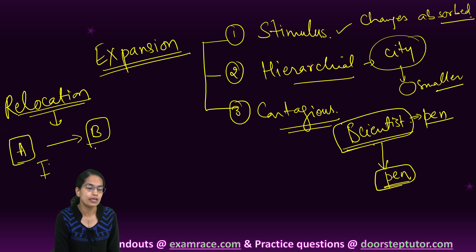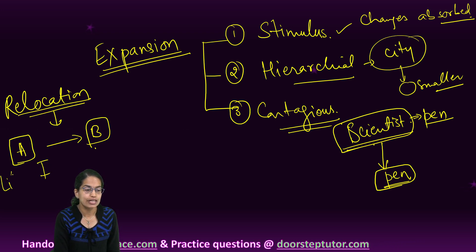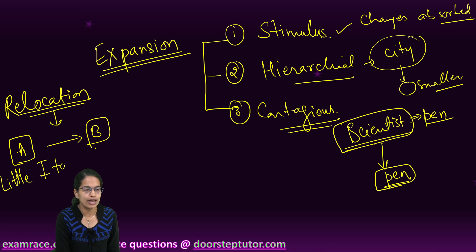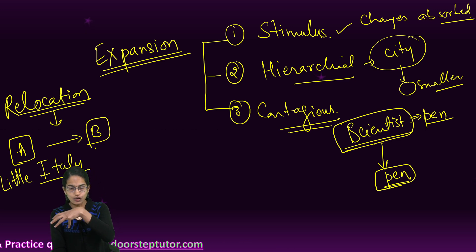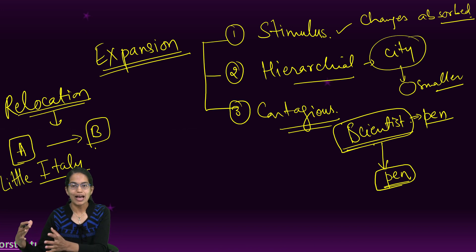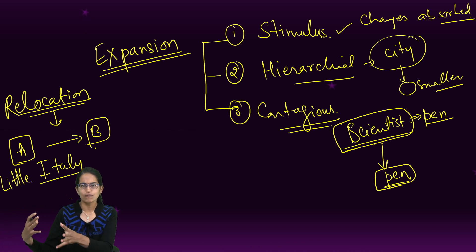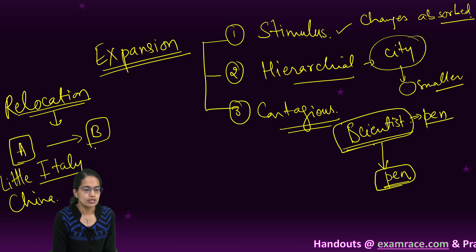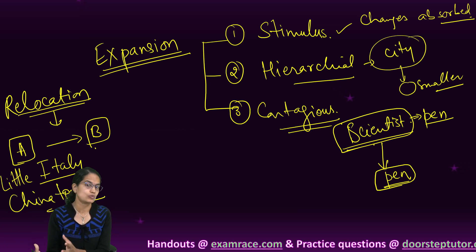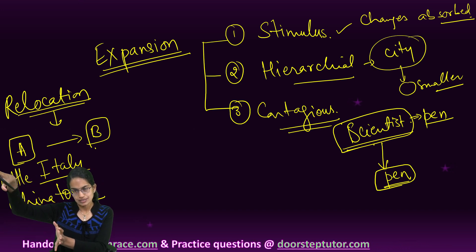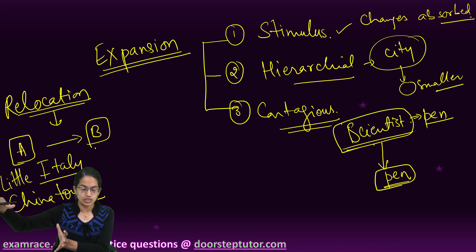A good example would be when we say Little Italy. Let's say I move to any town and close to the downtown, you would have a Little Italy where the culture of people of Italy would be seen. Or I see a Chinatown. This Chinatown would have the things or characteristics which are similar to the main China or the origin region China.